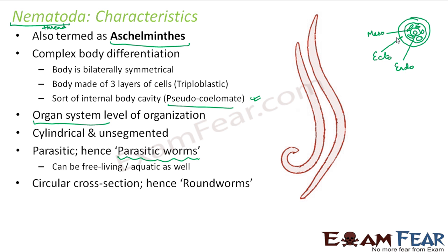They have a circular cross-section, which is why they are also known as roundworms. If you look at the cross-section at any point, it is circular. Compare this with Platyhelminthes, which are dorsoventrally flattened — flattened from back to front — and are therefore called flatworms. Nematodes have a round cross-section, so they are called roundworms.